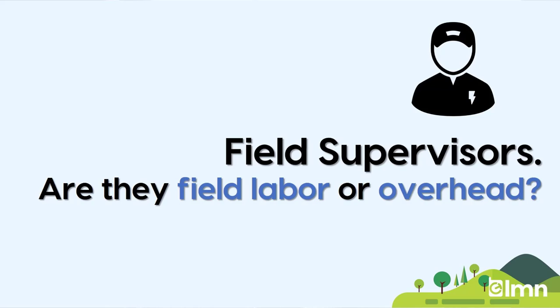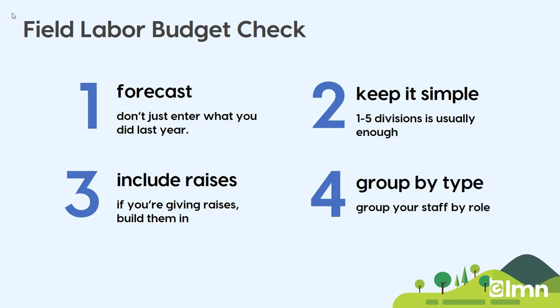If you have employees who do a bit of both, put some of their hours in field labor and some in overhead so the total matches their entire salary. Here are quick checks to get your field labor budget right: one, make sure it only includes field staff whose time you estimate; two, forecast changes — if you've grown your sales budget by 20%, you'll likely need more hours or more people, so reflect that; three, don't forget raises and changes; four, group staff by type using an average wage per role to keep your budget simple.